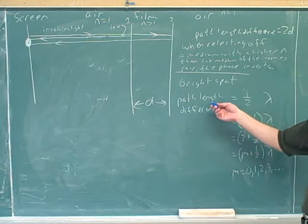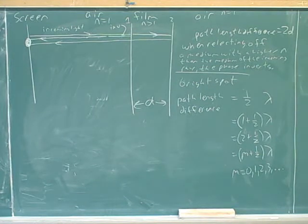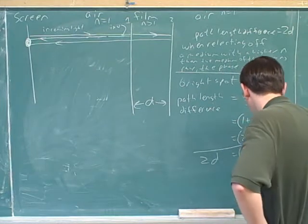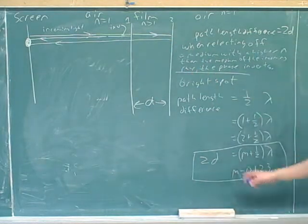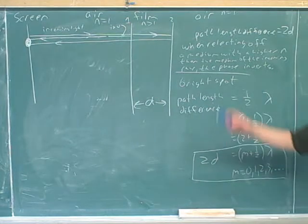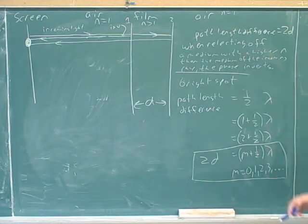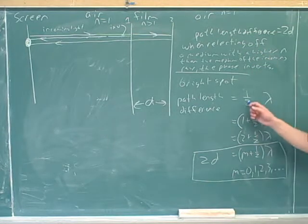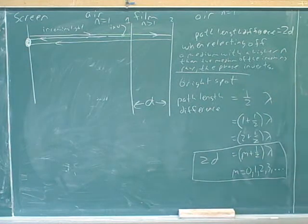All we need to do is remember how we figure out the path length difference in terms of the variables we've been talking about. How much further does the second ray go than the first one? It goes 2D. We can't just memorize the formula because it depends on what the mediums are, so it's always our job to come up with the formula first. For this particular case — air to film to air — the path length difference is 2D, and because of the inversion, we need an extra half wavelength to cancel it. That gives us our formula.